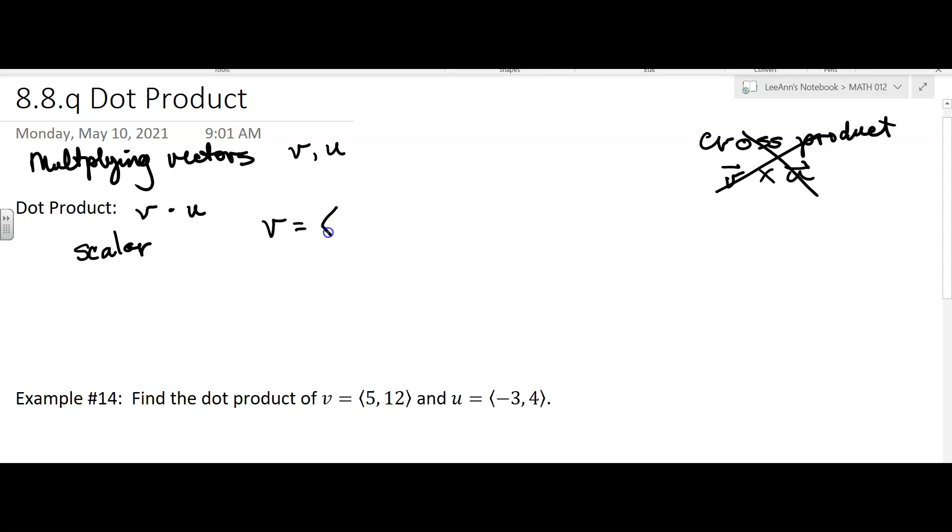Say it's in component form (a, b), and then your U is in component form (c, d). Then to do a dot product, V dot U, it's ac plus bd, and that's going to give you a scalar.